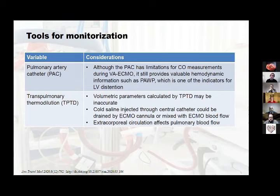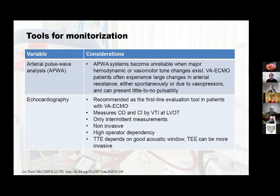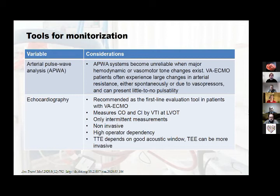Another problem with the PiCCO monitor, which measures cardiac output by the area under the pulse pressure curve, is that in cardiogenic shock with VA ECMO there is a back-flow that mixes with the flow coming from the heart, making these measurements inaccurate. Non-invasive arterial pulse wave analysis also struggles because in a nearly pulseless patient with 70–80% ECMO support, the monitor cannot measure cardiac output accurately, and large changes in arterial waveform occur due to afterload changes from ECMO flow or vasopressors.